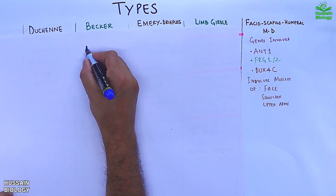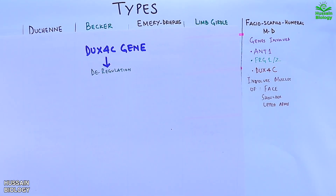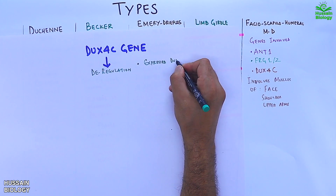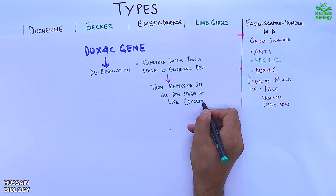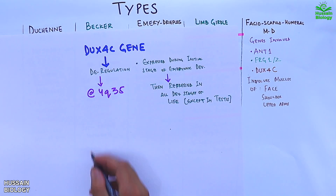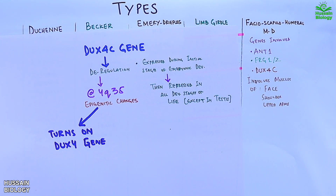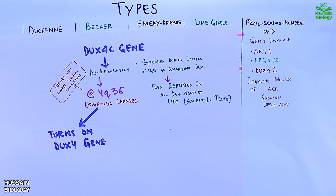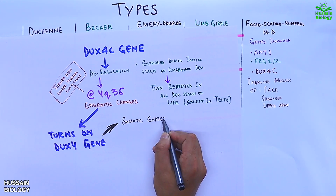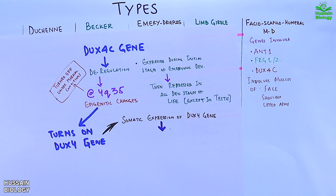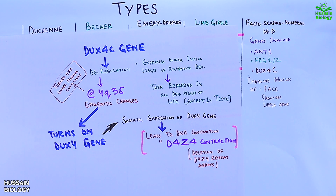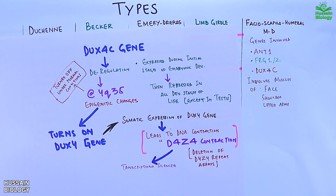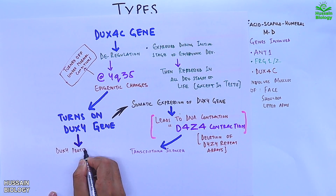Regarding the genetic mechanism of DUX4: this disorder is due to dysregulation of the DUX4 gene. Normally, DUX4 is expressed during the initial stages of embryonic development and then remains repressed in all later developmental stages except in testes. However, in FSHD, epigenetic changes at the 4q35 chromosomal position turn the gene on. This dysregulation leads to somatic expression of DUX4, causing D4Z4 contraction, which deletes the D4Z4 repeat arrays. These repeat arrays normally act as transcriptional silencers; when deleted, cell death is inevitable. Furthermore, the DUX4 gene product itself is toxic to cells, collectively leading to FSHD.